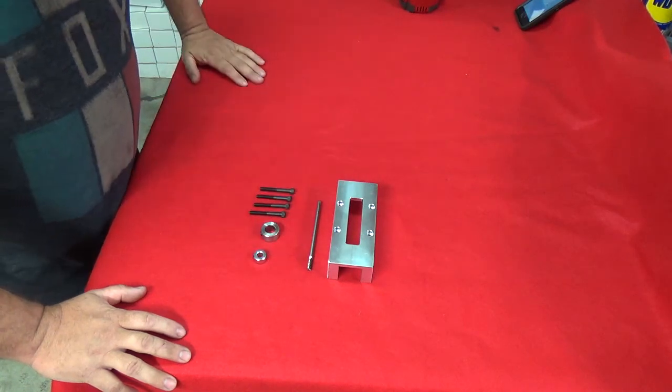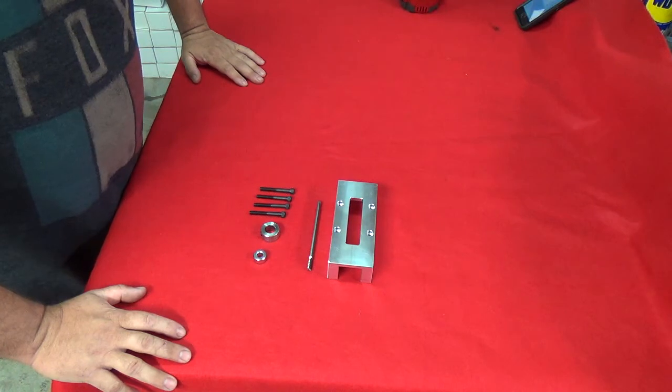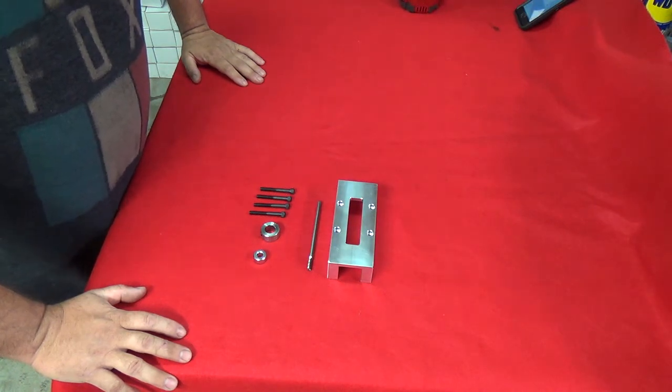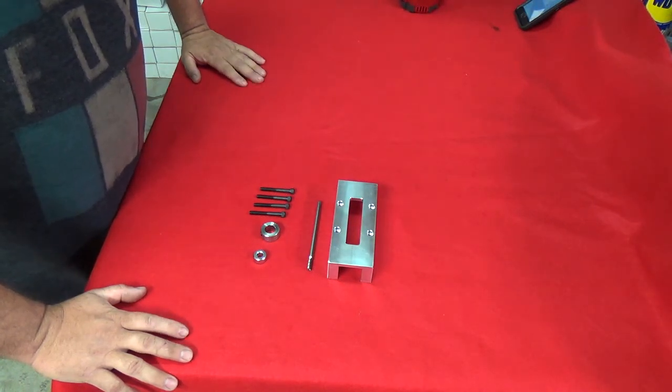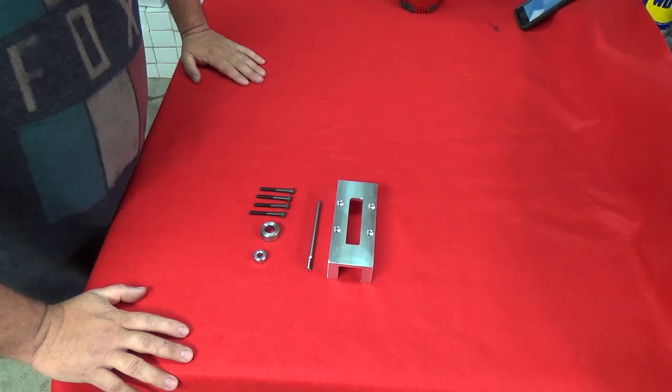What these two collars are going to allow you to do is drill to a set depth without over drilling. This is going to allow you to use this with a hand drill as well as a drill press and or a mill.